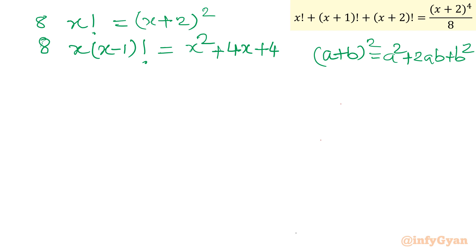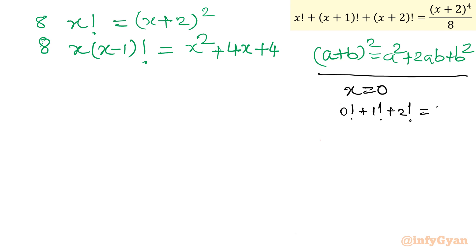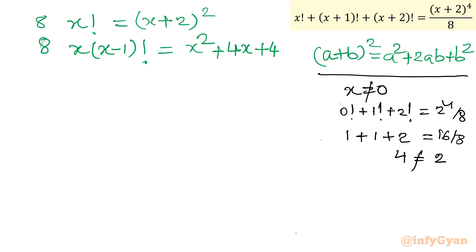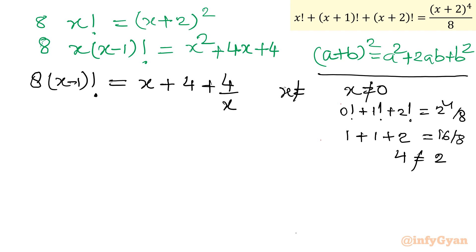Before dividing both sides by x, we verify x=0: 0! + 1! + 2! = 1+1+2 = 4, but (0+2)^4/8 = 16/8 = 2. So LHS≠RHS, confirming x≠0. We can safely divide by x, giving: 8(x−1)! = x + 4 + 4/x.